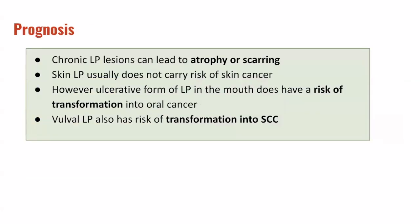In terms of the prognosis, chronic lichen planus lesions can lead to atrophy and scarring, particularly if left untreated. Skin lichen planus lesions usually do not carry a risk of transforming into skin cancer. However, the ulcerative form of lichen planus in the mouth does have a risk of transformation into oral malignancies. Genital lichen planus, such as vulval lichen planus, also has a risk of transformation into cancers including squamous cell cancer. Therefore, these subpopulations should be closely monitored to observe for any potential risk of transformation.